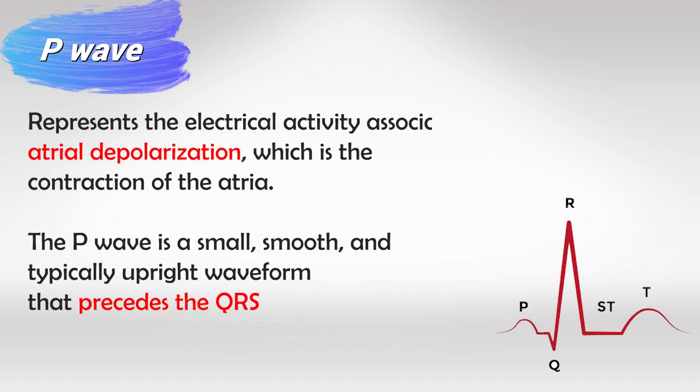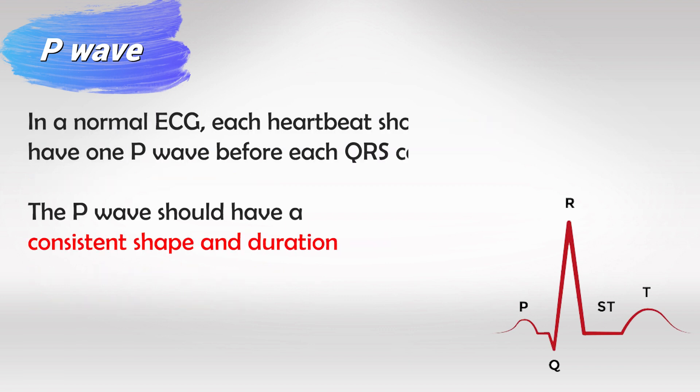We'll start with the P wave. In cardiology, whenever you see the term depolarization it means contraction and repolarization means relaxation. So a depolarizing atrium is a contracting atrium and the P wave simply means that the atria has contracted. As we know, the atria contracts first to get the blood into the ventricles and then the ventricles contract. The atria is above and it's very small compared to the ventricles. So when the atria contracts it causes the P wave and it's a small bump as you can see here.